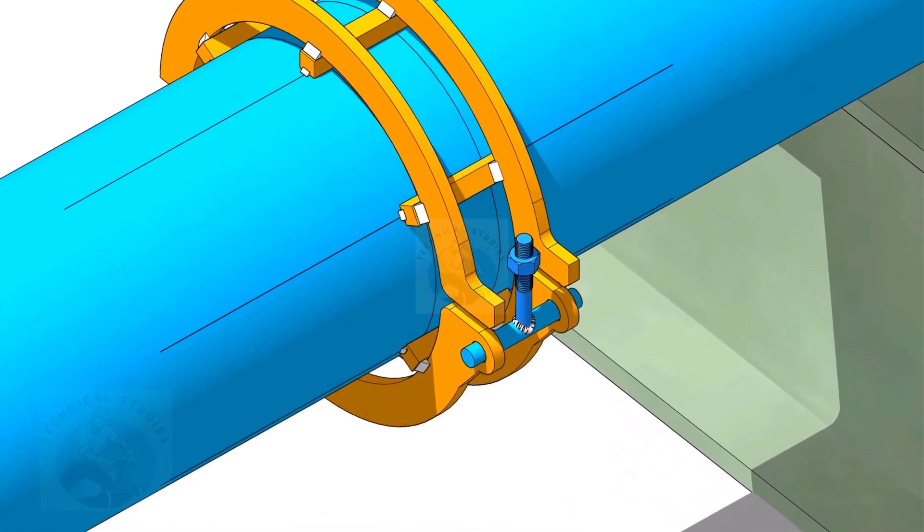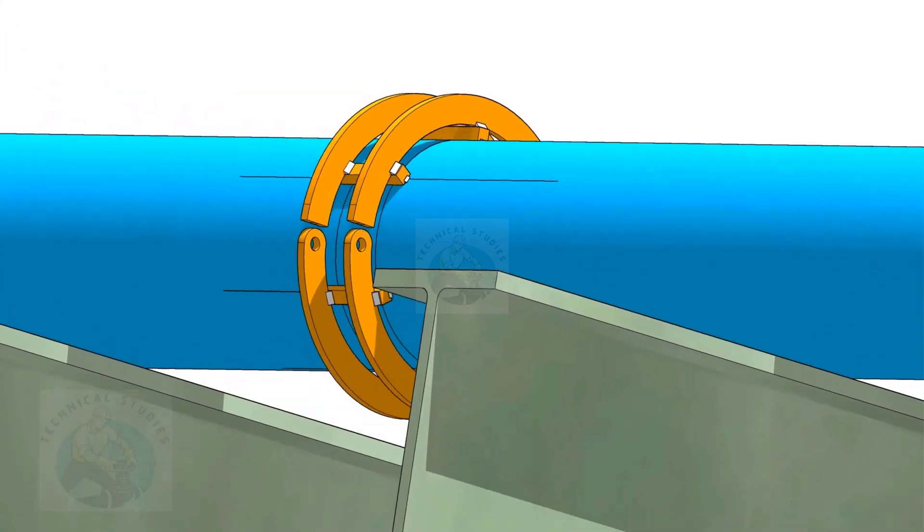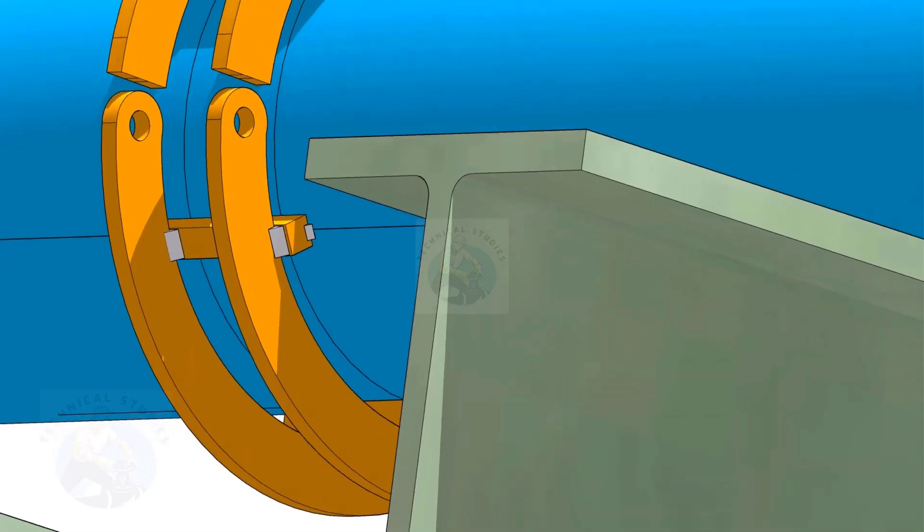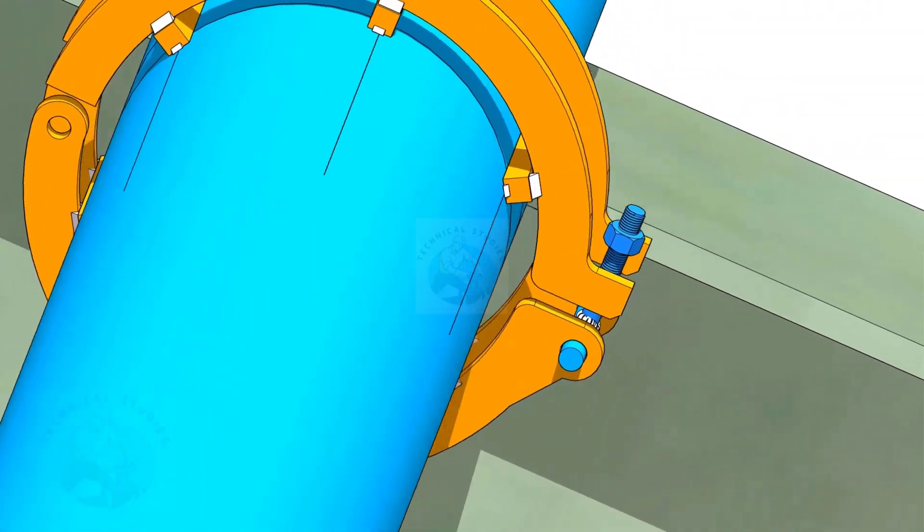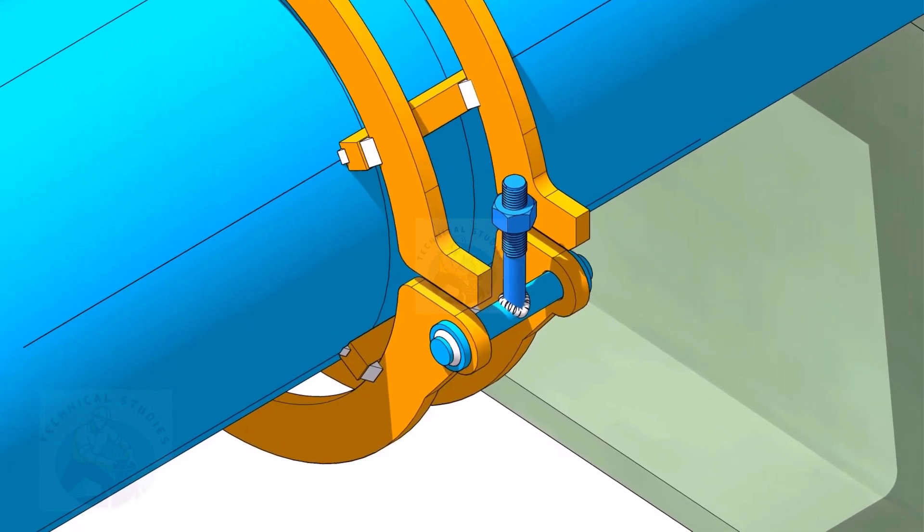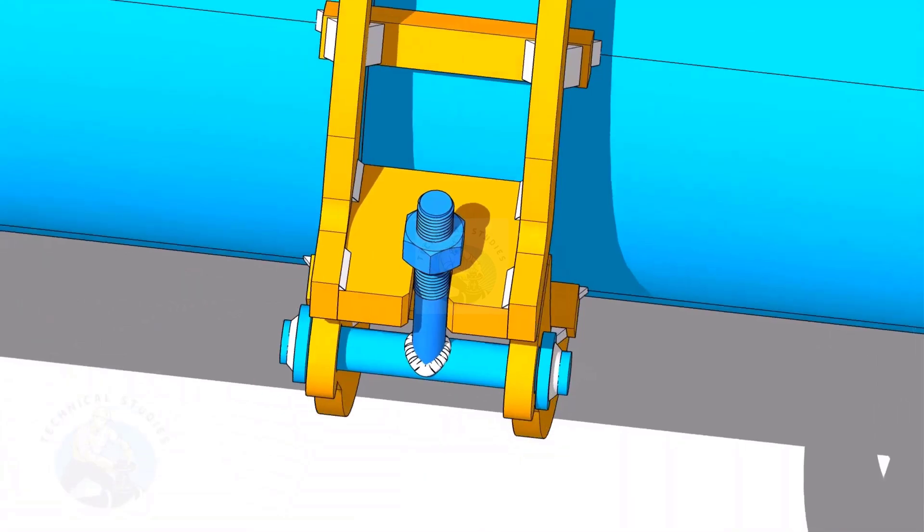Tack weld the bottom rings also. Put the lock bolt before tack welding these rings. First, put the bolt and the hing plates, and tack weld the hing plates with the top rings. Tack weld the slotted plate with the top rings as shown.